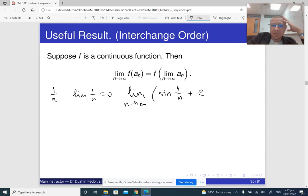e to the minus one over n times one minus, let's say minus one over n, something like this.